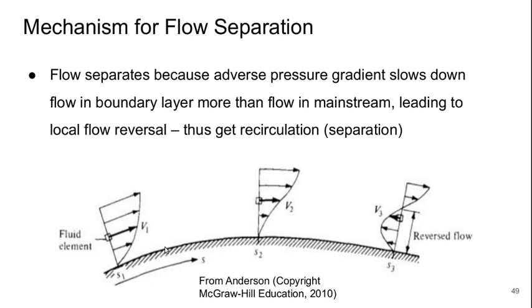So we start with a healthy looking boundary layer here and as our adverse pressure goes on, the velocity close to the wall decreases faster than the velocity far away. This starts getting, eventually we get an inflection point in the velocity profile. This is the point of incipient separation.